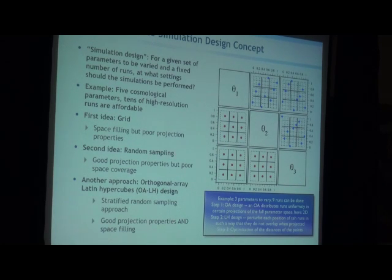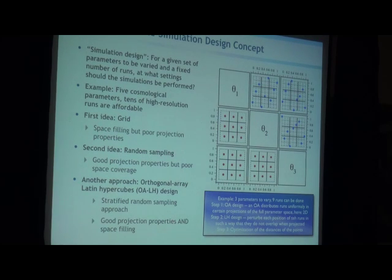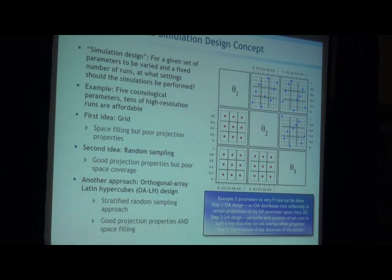Another question is what does each parameter do to your power spectrum. Omega baryon has almost no effect on the power spectrum — very small influence. But Sigma 8 or Omega matter change the power spectrum quite a bit. So you ask how many parameters do a lot versus a little. In our first example we actually reduced the cosmological parameters to five instead of six. We said the Hubble parameter is so well constrained from CMB measurements that we don't explicitly have to simulate it.